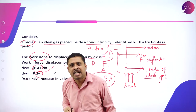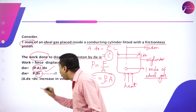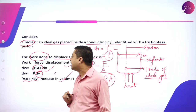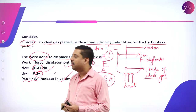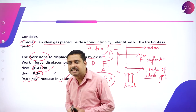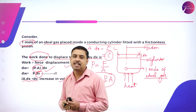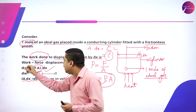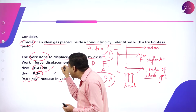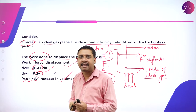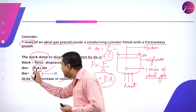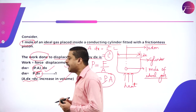So dx is a small displacement, a small change. A into dx is dV, which is the increase in volume. Going back: work done to move the piston is force times displacement. dW — the small amount of work done to displace the piston by a small distance dx — force is pressure times A, and A times dx is dV, which is the increase in volume.